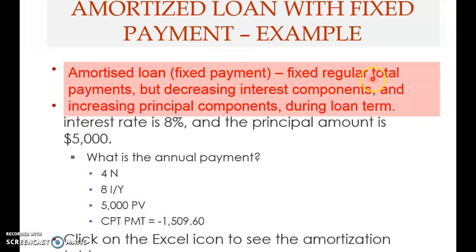An amortized loan with fixed payment means there are fixed regular total payments, but with decreasing interest components and increasing principal components during the loan term. The interest always decreases because you repay part of the principal over time. Since the total payment is fixed and interest goes down, the principal component must increase over time.